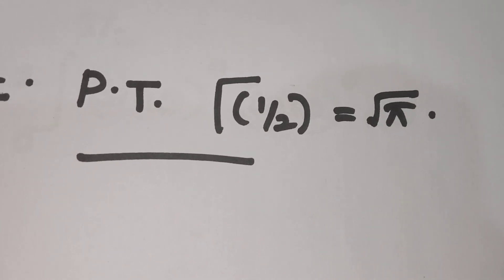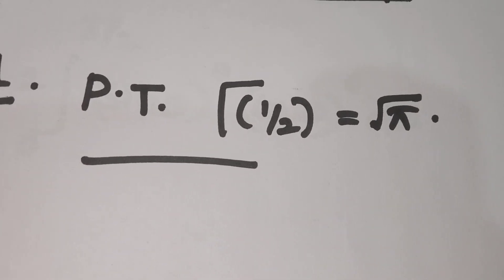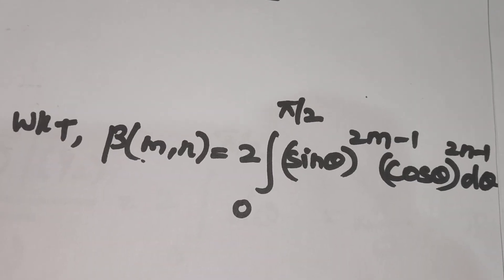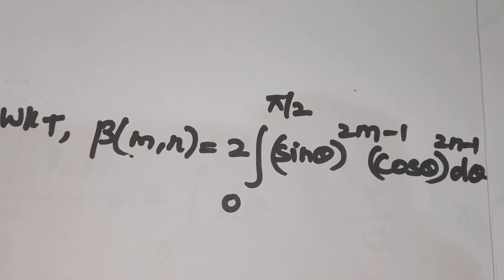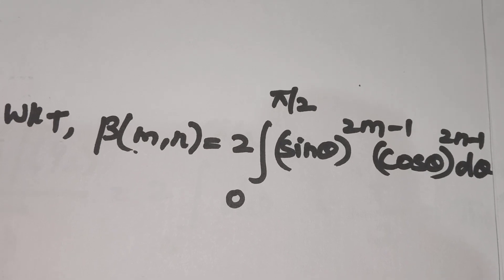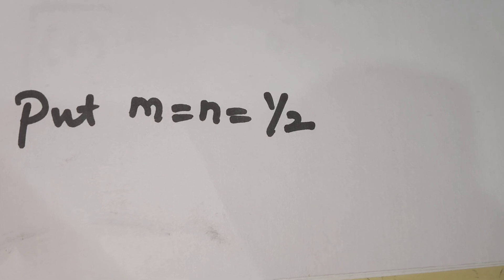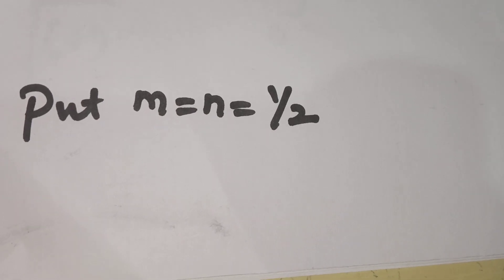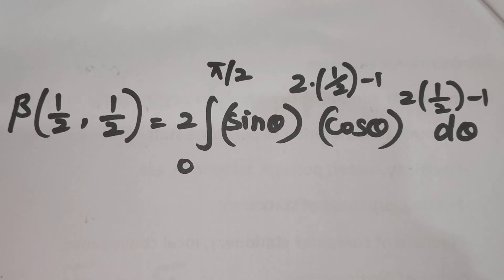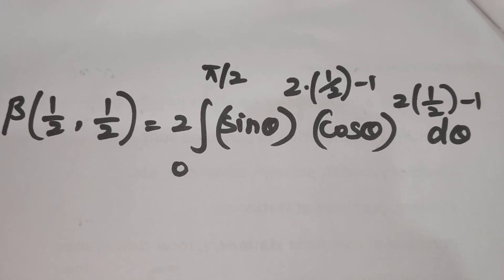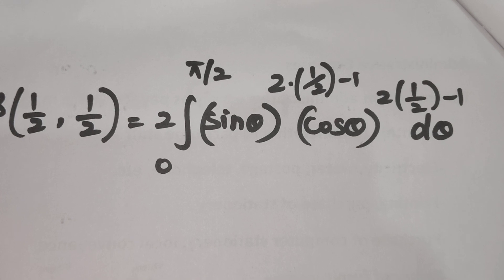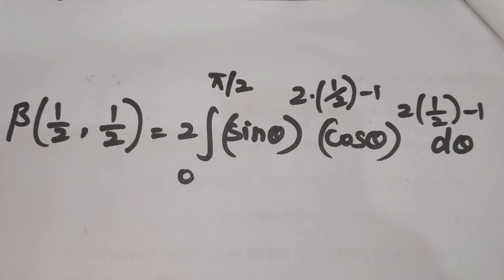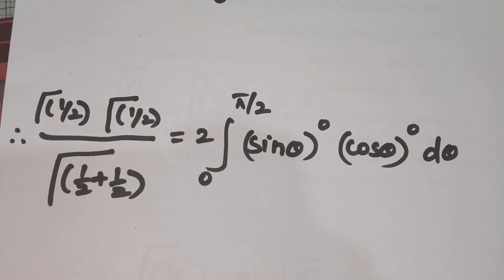Property 2 of beta and gamma functions: prove that gamma of 1 by 2 is equal to root pi. We know that by a property of the beta function, beta(m,n) equals 2 times integral from 0 to pi by 2 of sin theta power 2m minus 1, cos theta power 2n minus 1, d theta. Now we compute beta(1/2, 1/2) equal to 2 times integral from 0 to pi by 2 of sin theta power 0, cos theta power 0, d theta.